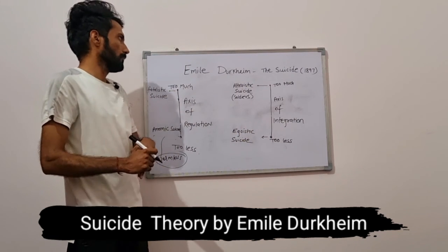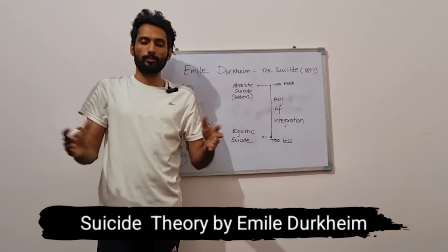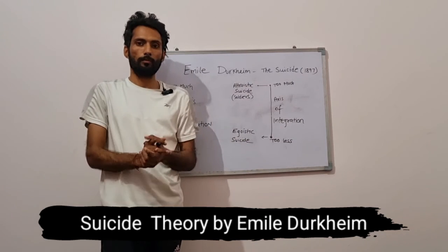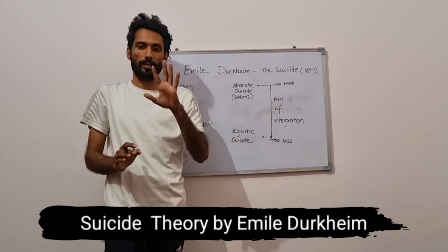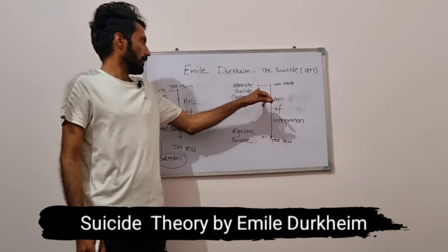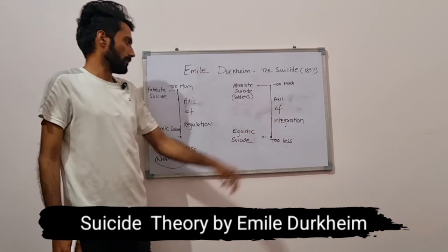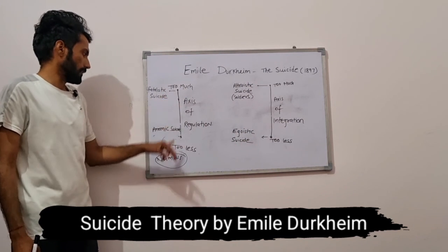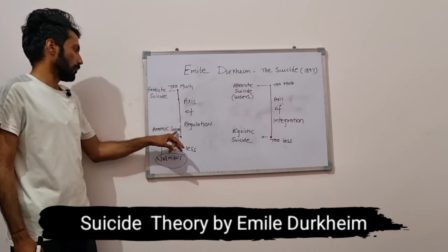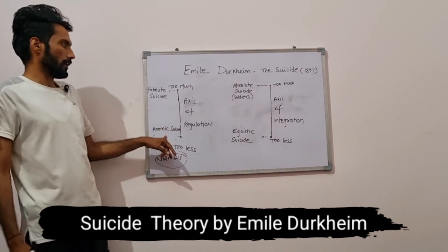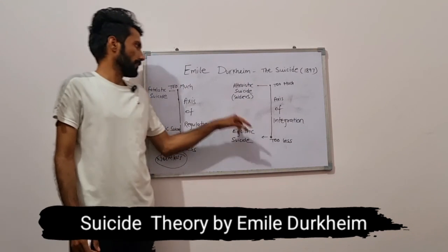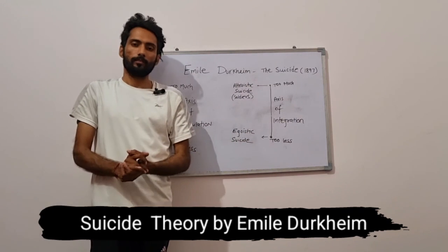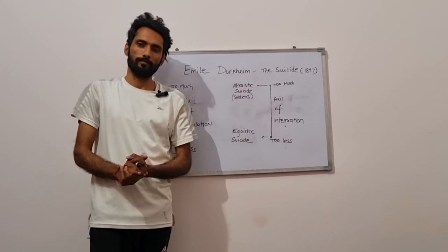So this was Emile Durkheim's book 'The Suicide.' We discussed four types of suicide: the first is altruistic suicide, the second is egoistic suicide, the third is fatalistic suicide, and the fourth is anomic suicide. If you liked the video and found it helpful, thanks for watching.